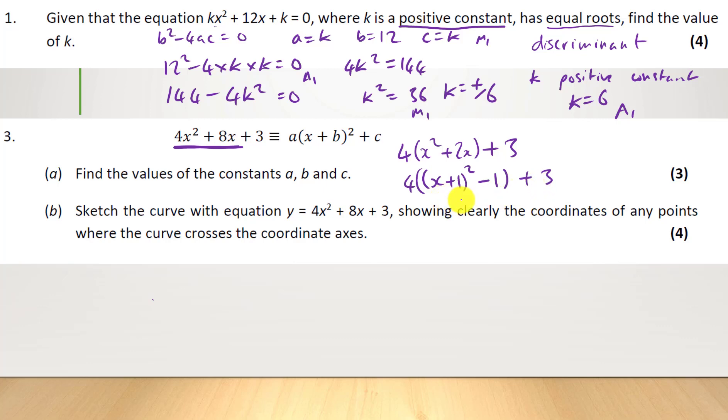So we expand this out, we're going to get 4, x plus 1 squared, minus 4 plus 3, and then we're going to finish off nicely with 4(x + 1)² minus 1. So a equals 4, b equals 1, and c equals minus 1. That's quite easily done.